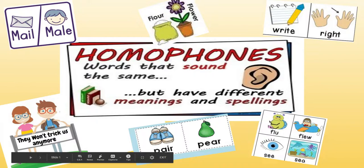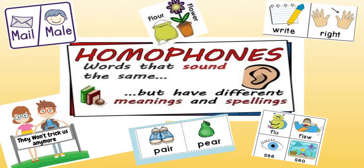Hello children, how are you all? I hope you're taking care of yourself and studying well too. Today we're going to learn about homophones — words that sound the same but have different meanings and spellings. Homophones are words that have the same pronunciation but completely different meaning. For example, when I say 'pair' or 'male,' they sound exactly the same but have totally different meanings.